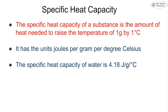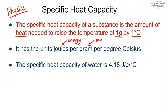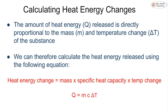Another key term we have to know is specific heat capacity, which you may have covered in physics. The specific heat capacity of a substance is the amount of heat that is needed to raise the temperature of one gram by one degree Celsius. It has the units joules per gram per degree Celsius. The specific heat capacity of water is 4.18, or sometimes written as 4.2 joules per gram per degree Celsius. If we are using this number in an equation, we need to relate it to energy, mass and temperature.